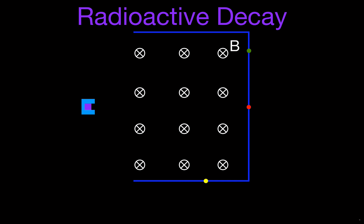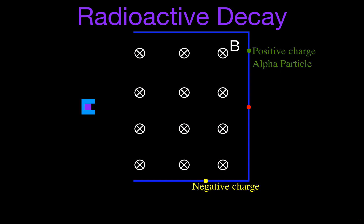Now, if you know something about magnetic fields, charged particles, and the Lorentz force, you would know that the particles deflected up or to the left have a positive charge, and they became known as alpha particles. The ones deflected down had a negative charge, and they became known as beta particles. And those that went straight through had no charge, and they became known as gamma particles or gamma rays.